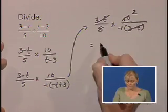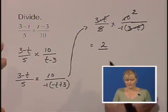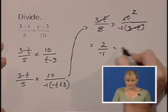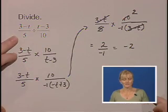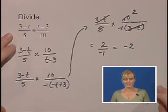So what we have left in the numerator is 2 and in the denominator negative 1. And we could rewrite that as negative 2. So after performing the division of these two fractions, our answer is negative 2.